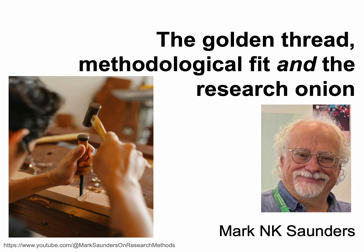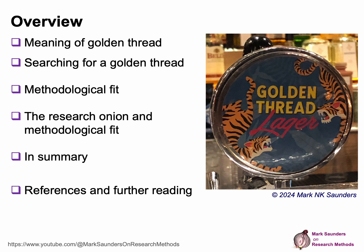This is one of a series of YouTube presentations on my channel, Mark Saunders on Research Methods — you can see the link on the bottom left of the slide. In this presentation we'll start by looking at the meaning of golden thread, then take an example of written work to identify the golden thread and use it to explore methodological fit. We'll then see how the research onion can show methodological fit, and where methodologies do not fit. I'll summarize at the end and give you some references and further reading.